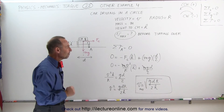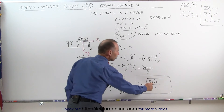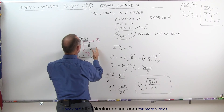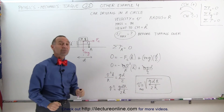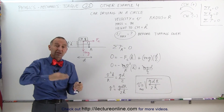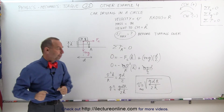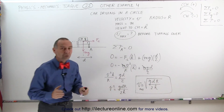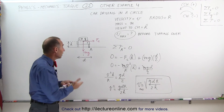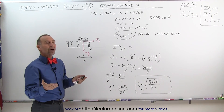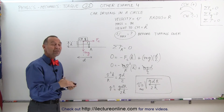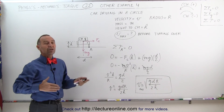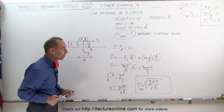Now let's explore those three variables. First, the width of the car. The wider you make the car — the farther you space the tires apart — the larger the maximum velocity can be. A car that's less likely to tip over is one that has the tires farther apart. Second, the radius of the curve. The greater the radius of the curve, the less likely the car will tip over. That's why on freeway on-ramps and off-ramps, you want the radius of the turn to be as great as possible, so cars are less likely to tip over as they drive around.